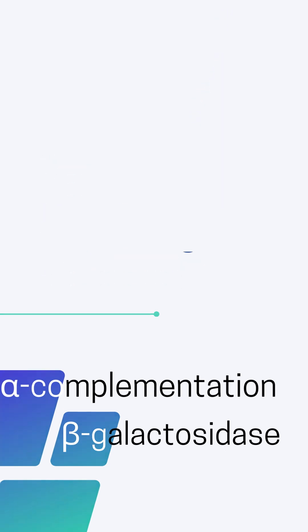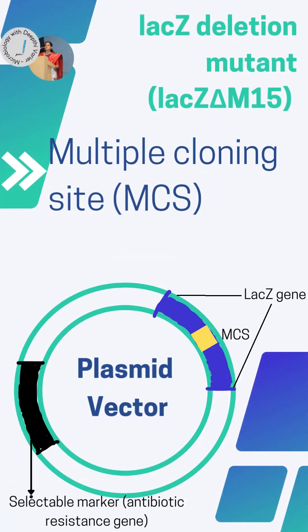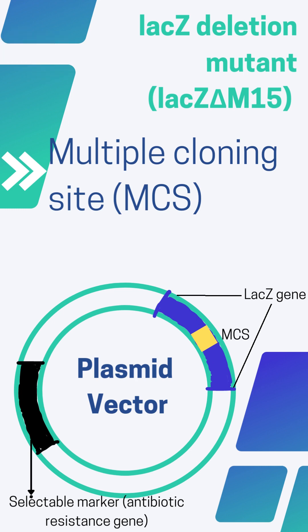The host E. coli strains used for these experiments contain a mutation which results in an inactive beta-galactosidase enzyme. Such cells can make a functional beta-galactosidase enzyme only if they take up the plasmid vector, and that plasmid vector is going to contain our gene of interest. In the plasmid vector, there is usually a lacZ gene which has a multiple cloning site.